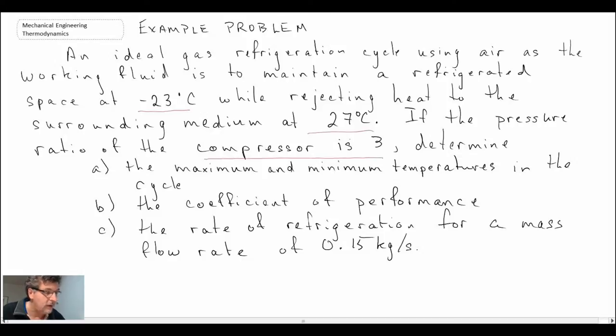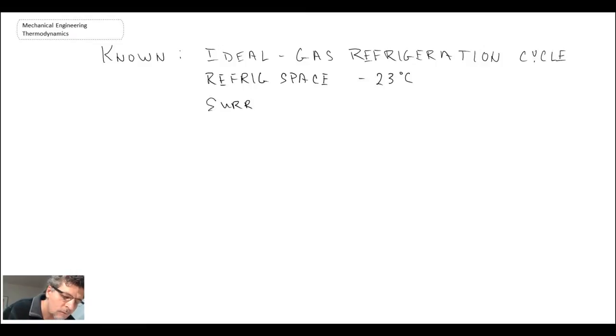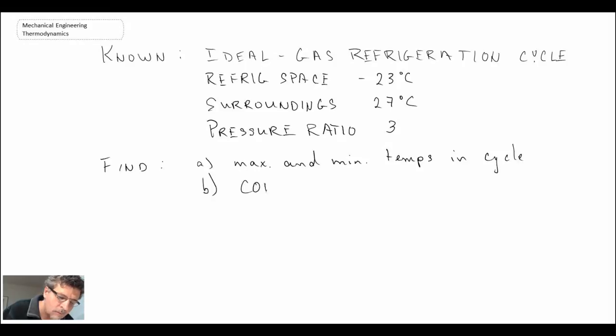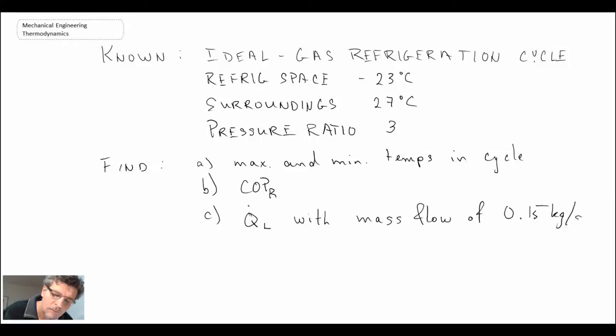I'll write out what we know and what we're looking for, and then we'll solve the problem. So that's what we know and what we're looking for. Now I'll write out the process schematic as well as the process diagram, and then we'll start working through the problem solution.